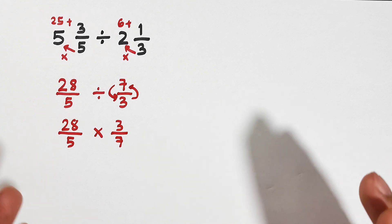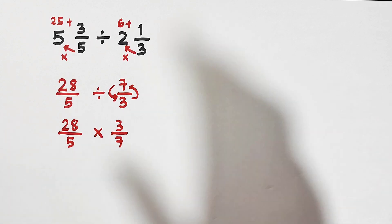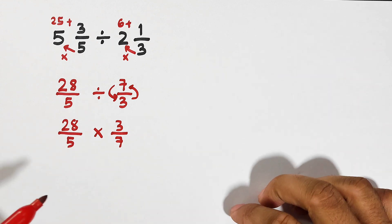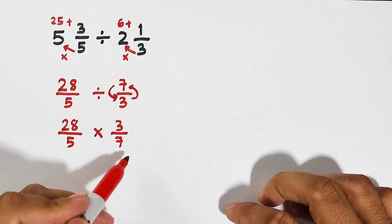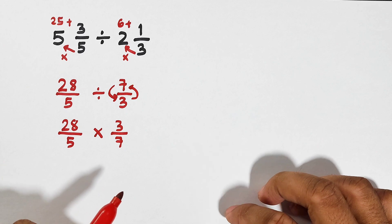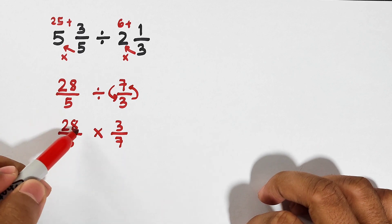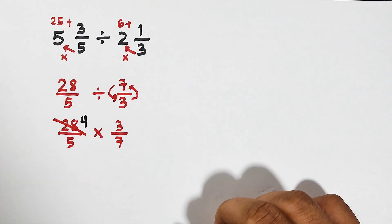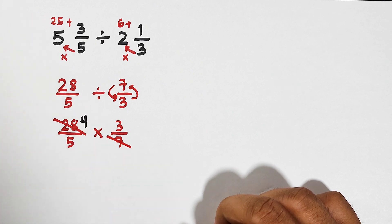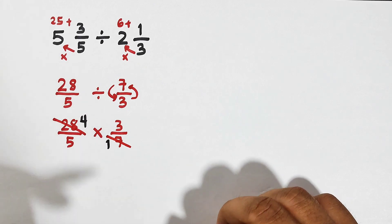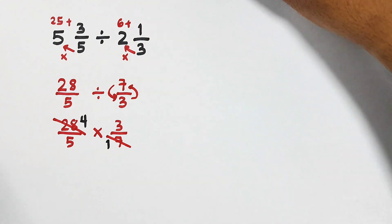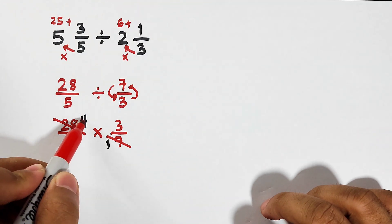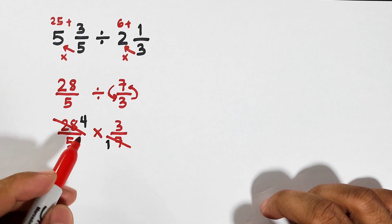Now after copying, changing the operation, and getting the reciprocal, you can directly multiply the numerators and denominators. But to avoid a bigger number, we can cancel out 28 and 7. Their greatest common factor is 7, so we can cancel this out and make it equal to 4, and we can also cancel this 7 and make it equal to 1. In this case, it lowers the numbers.